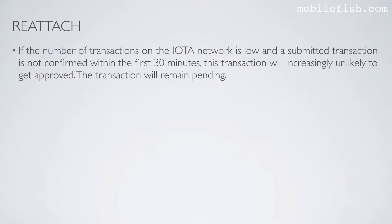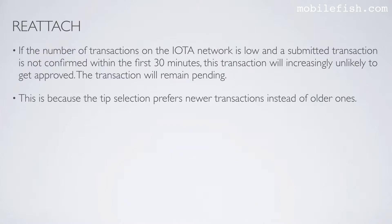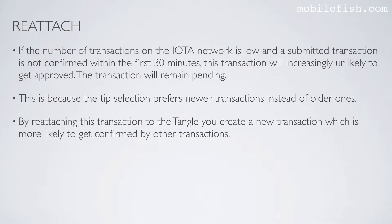If the number of transactions on the IOTA network is low and a submitted transaction is not confirmed within the first 30 minutes, this transaction will increasingly unlikely to get approved — the transaction will remain pending. This is because tip selection prefers newer transactions instead of older ones. By reattaching this transaction to the tangle you create a new transaction which is more likely to get confirmed by other transactions.